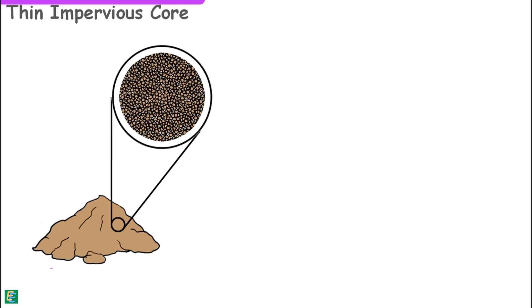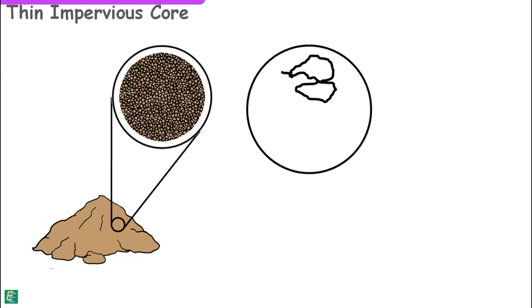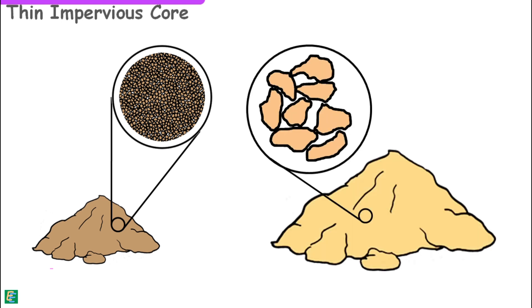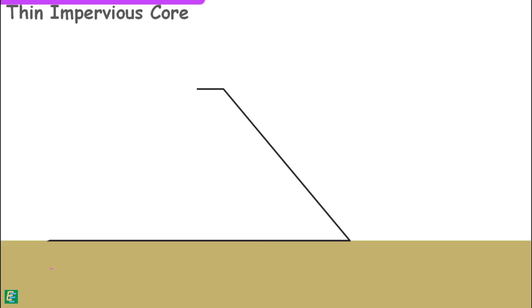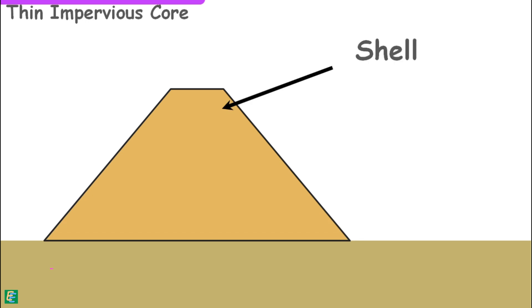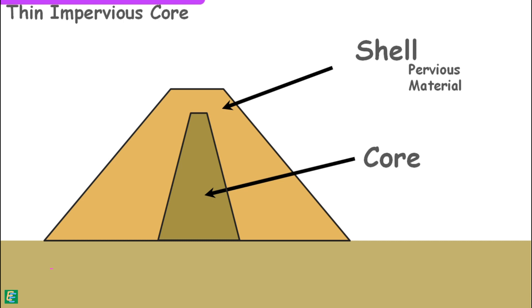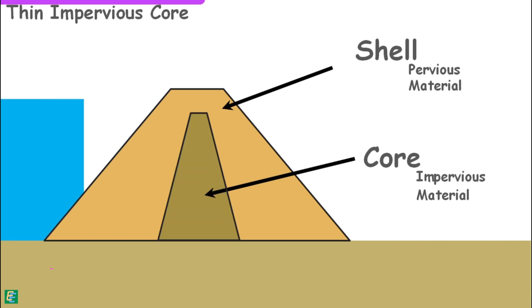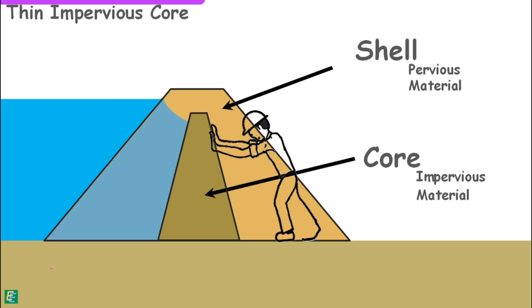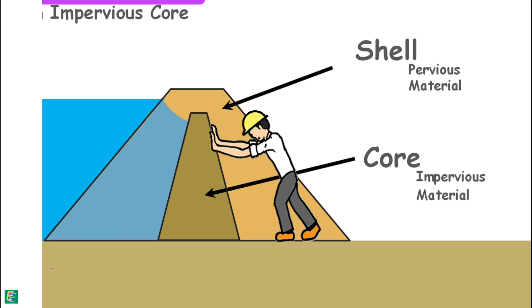The second category is the dam with a thin impervious core. If impervious soil is not available in large quantity near the site but pervious soil is abundant, the outer shell of the dam is constructed with pervious soil and a core in the middle is constructed using impervious soil. The impervious material holds back the water, and the pervious shell provides support to the core.